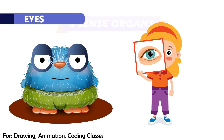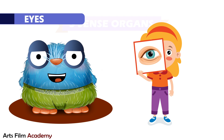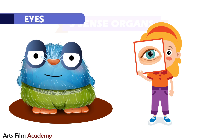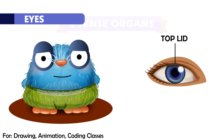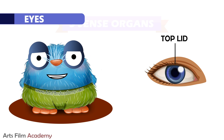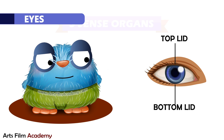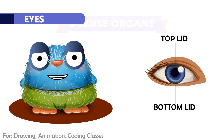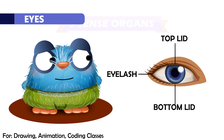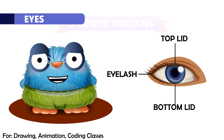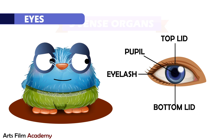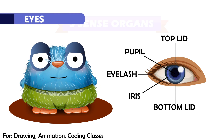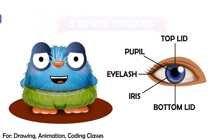Eyes help us to see our surroundings. And its parts are: top lid, bottom lid, eyelashes, pupil, and iris.